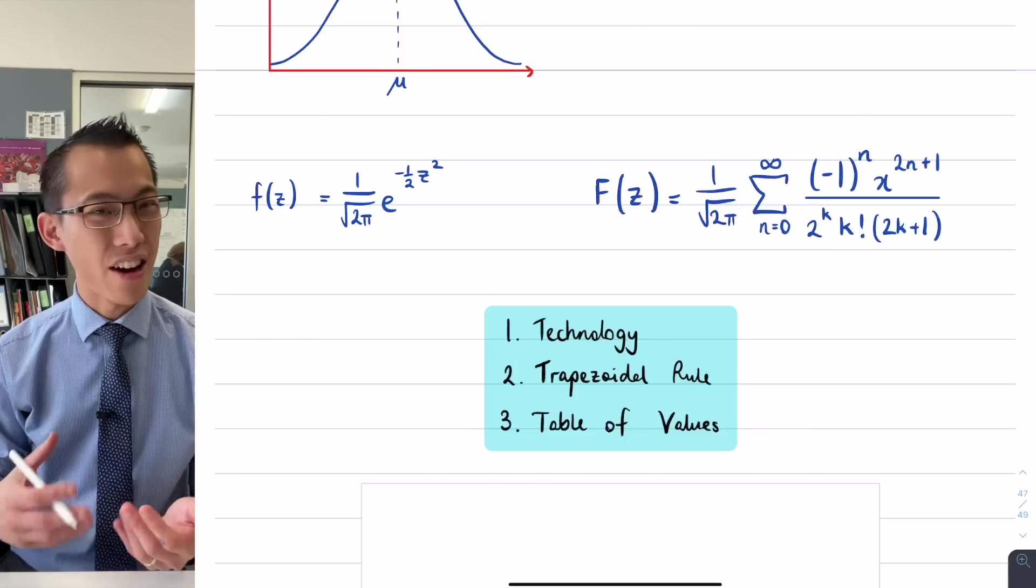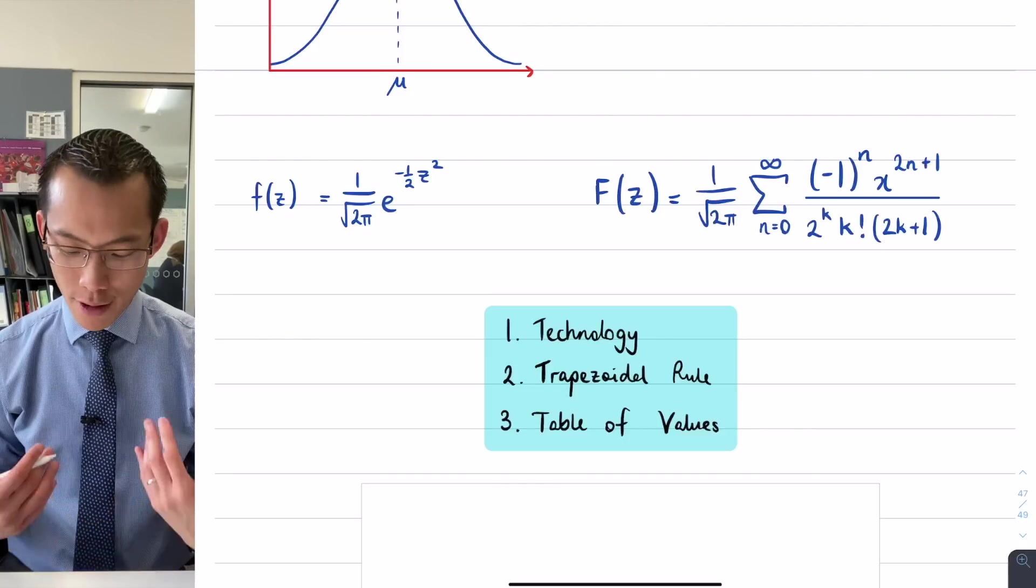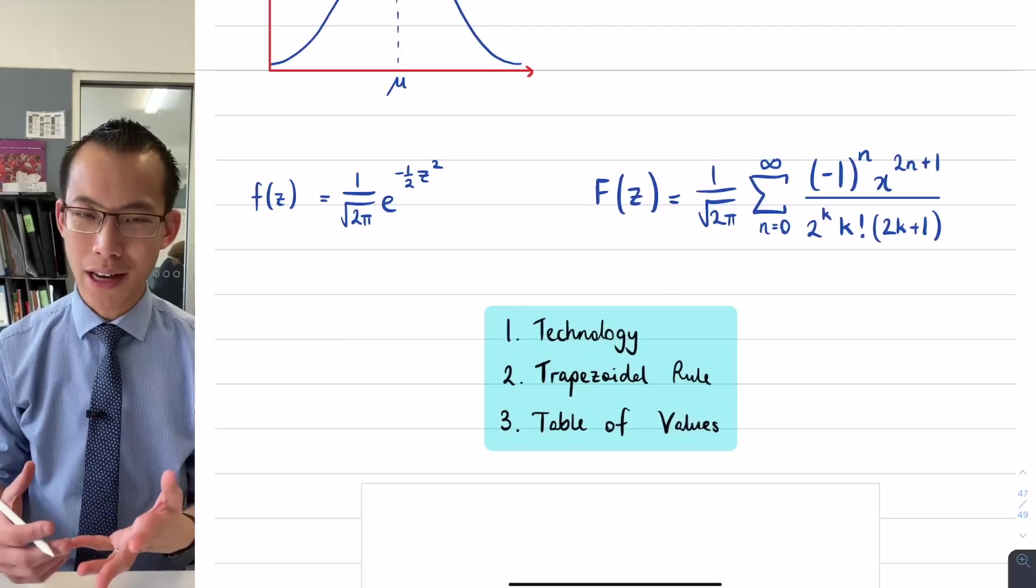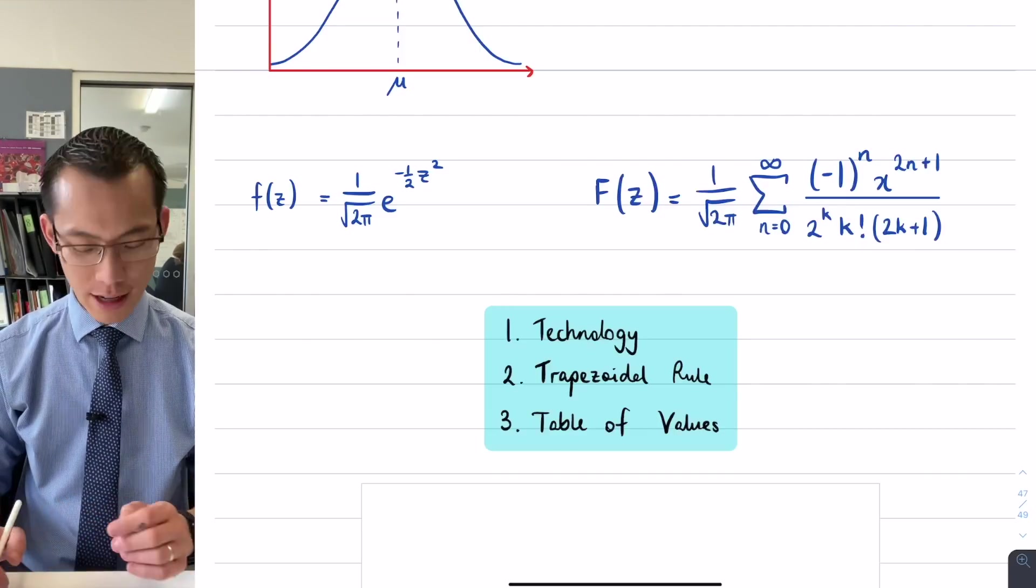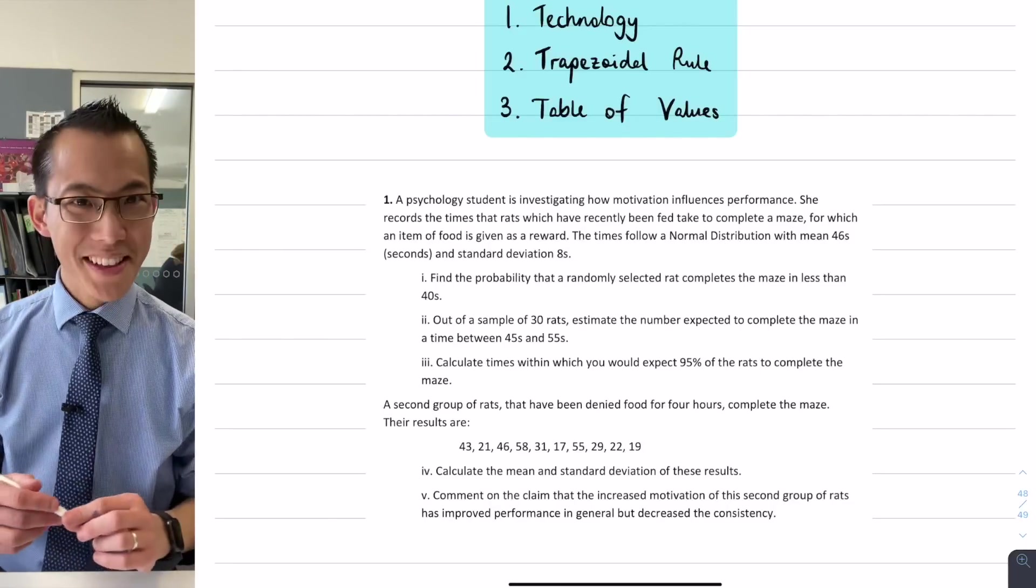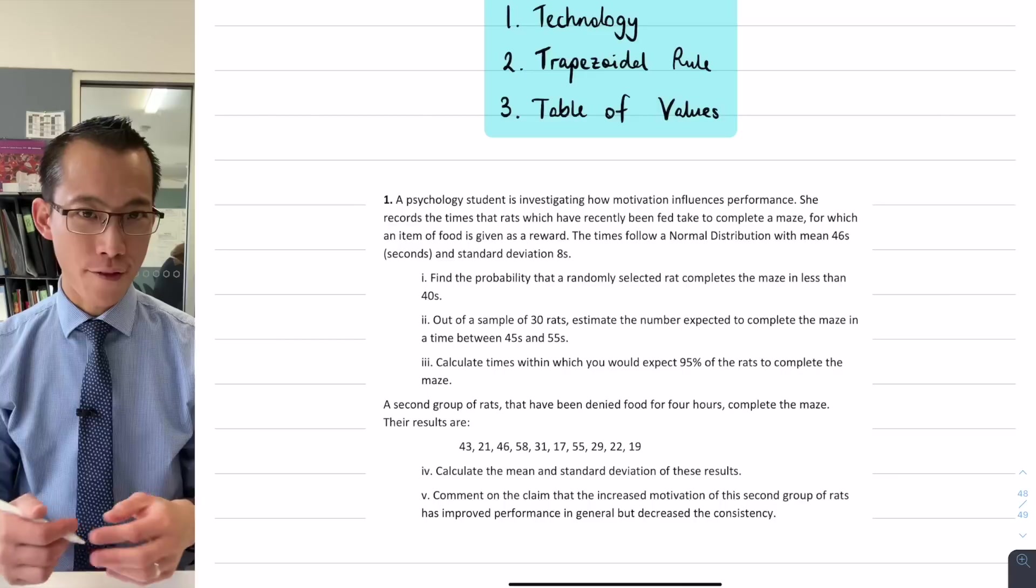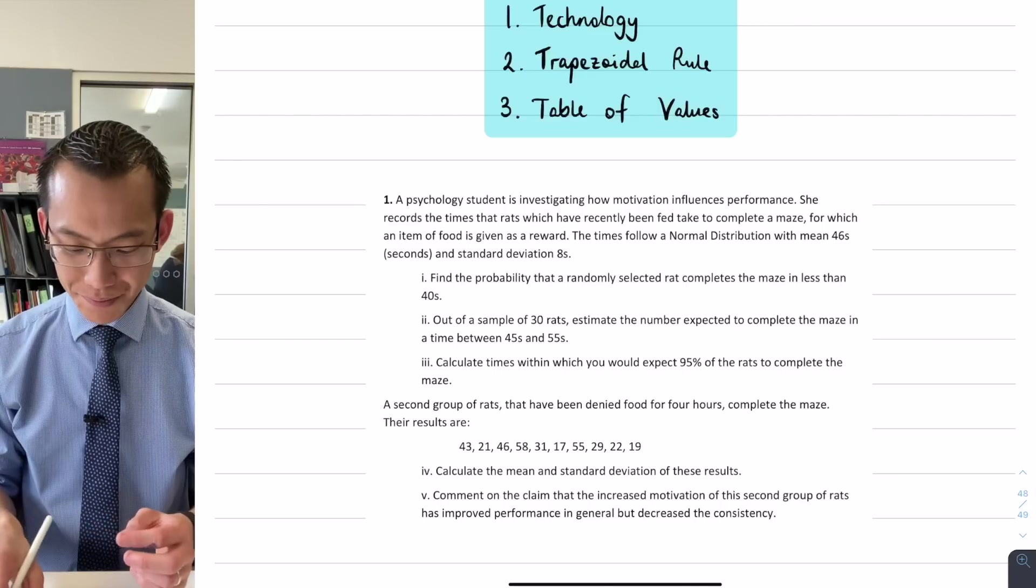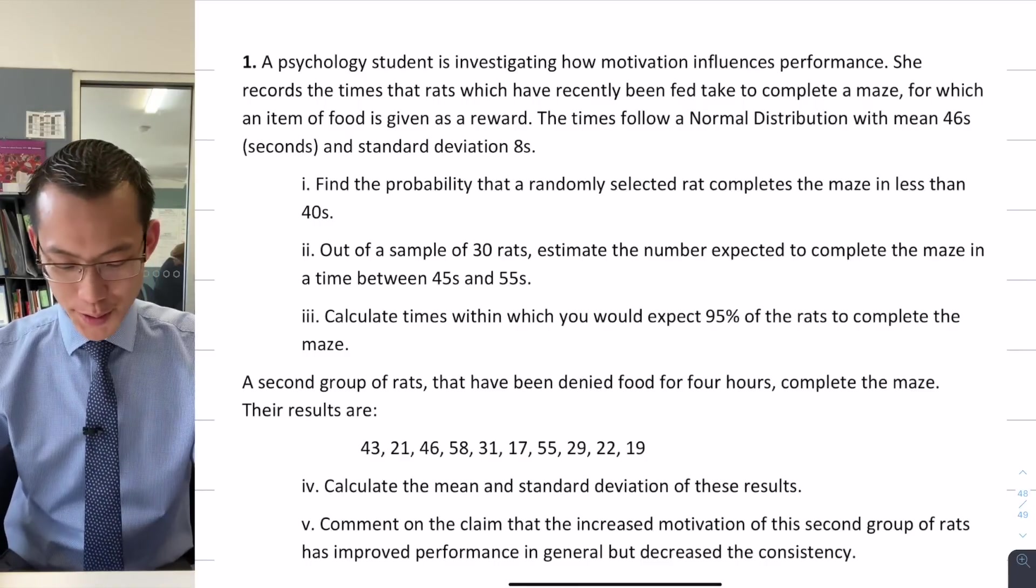What I'm going to show you is how you can use technology to actually handle this function and get, for our purposes, the closest thing to a precise answer that's possible for the normal distribution. The way we're going to explore this is by having a look at a fairly lengthy question. There's a lot to unpack. As we go I'll highlight information and write down what's important.